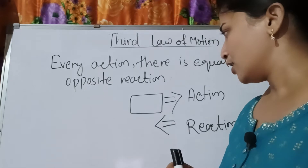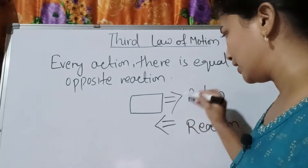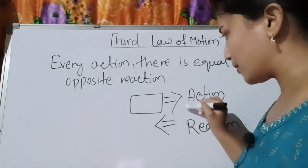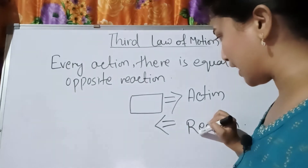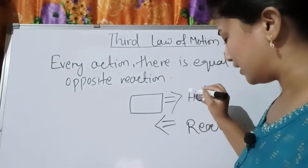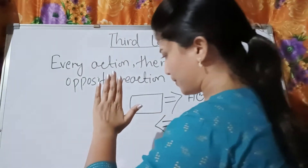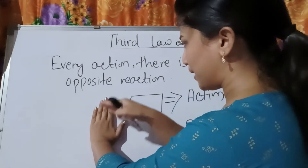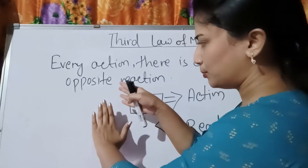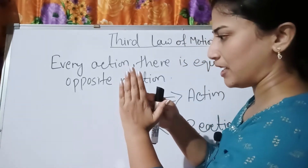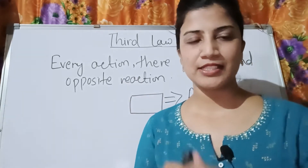Simply, if a body applies some force on another body, that is the action. The same amount of force will also be received by the first body, and that is called the reaction. For example, if my hand applies force on the board, the board receives the action, and the board also applies force back on my hand — that is the reaction.